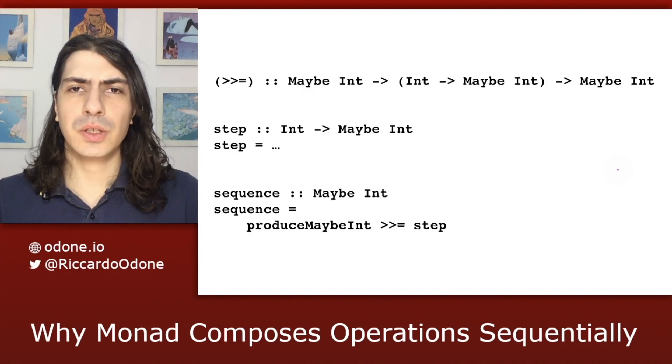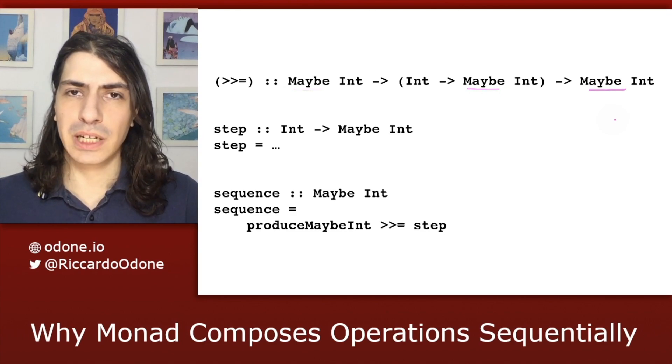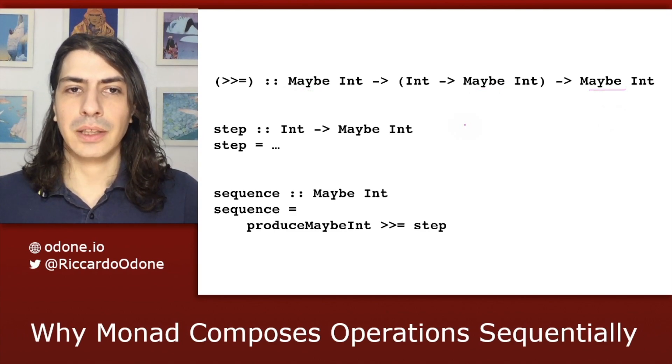Now, let's make things a bit more concrete. Let's take as our monadic context, maybe. So, we replace all of the occurrences of m in the type signature for bind with maybe. And then let's take as a and b the type int.